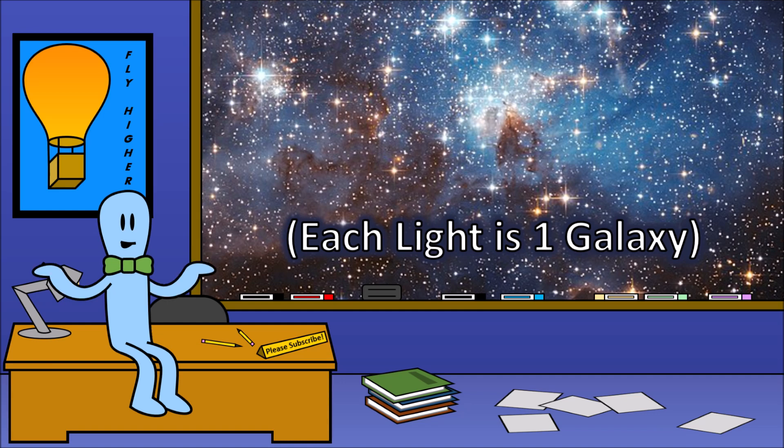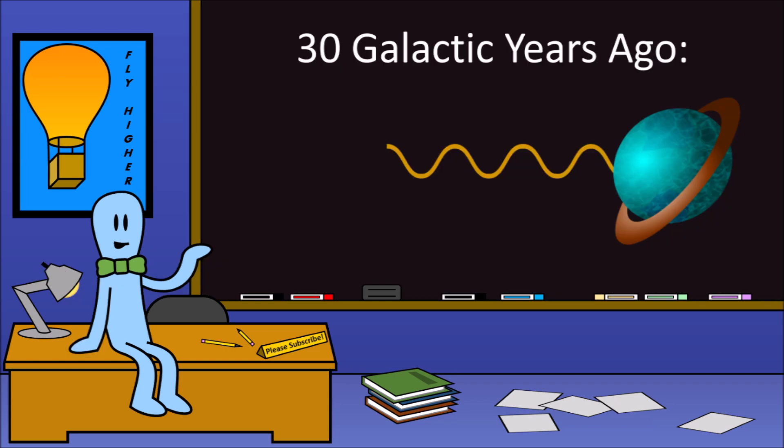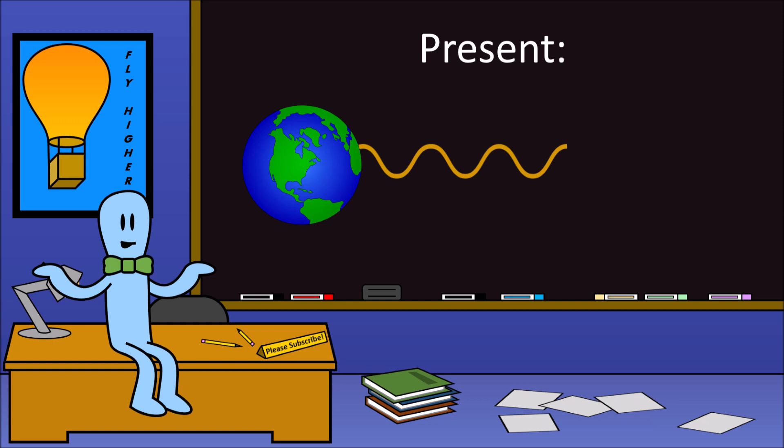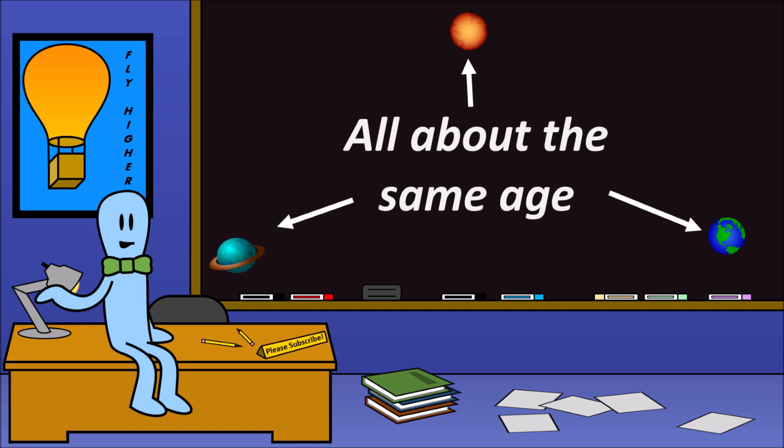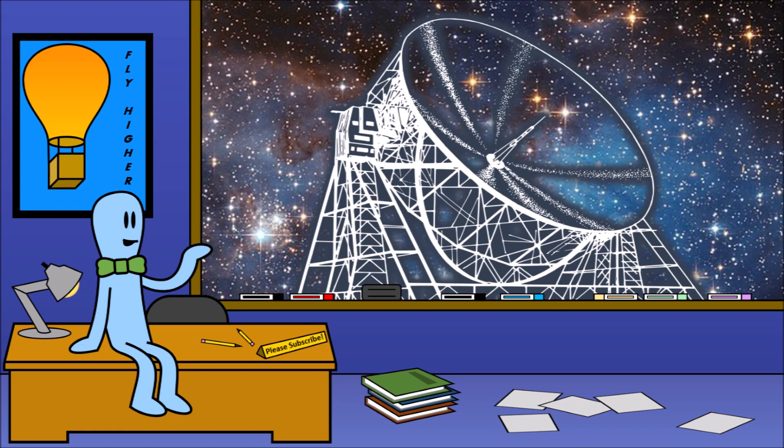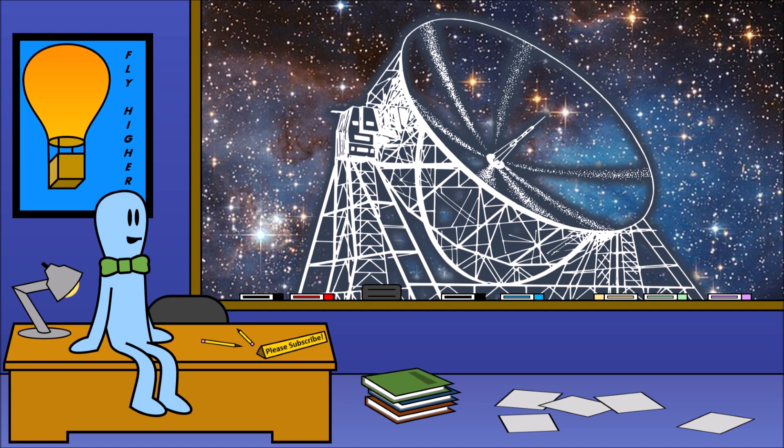Maybe even galactic years before we get that first blip that shows we're not alone in the universe. If intelligent life has existed in the universe for dozens of galactic years already, then there's a chance that their radio signals might reach us very soon since it's taken those signals dozens of galactic years to reach us. But if all intelligent life in the universe truly formed around the same time, then that means we're starting a long journey, waiting for those far away signals to reach us. And all we can do is wait, listen, and see what we find.